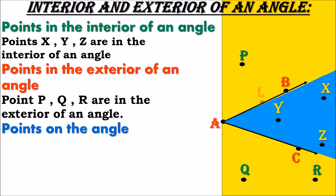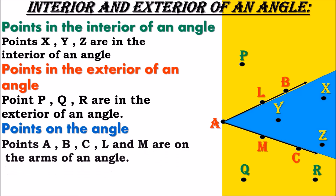Points on the angle. Point L and point M are on the angle — meaning they are on the arms of the angle. So points A, B, C, L, and M are on the arms of an angle.